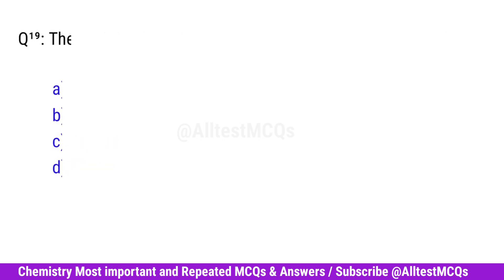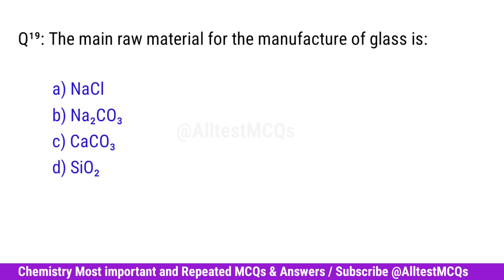Question No. 19. The main raw material for the manufacture of glass is? Correct option is D. SiO2.